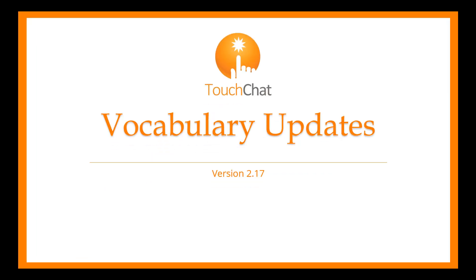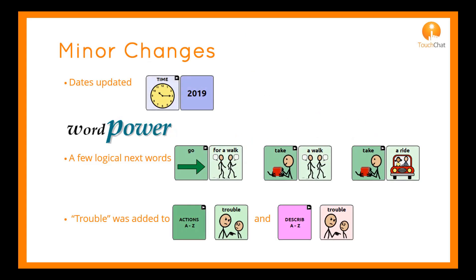A few updates to vocabulary are found in 217. Minor changes include dates updated in files to reflect the year 2019. WordPower additions include next logical words such as go for a walk, take a walk, and take a ride. Trouble was added to Actions A to Z under T and to Describe A to Z under T. These additions will be completed in all files in Update 218.